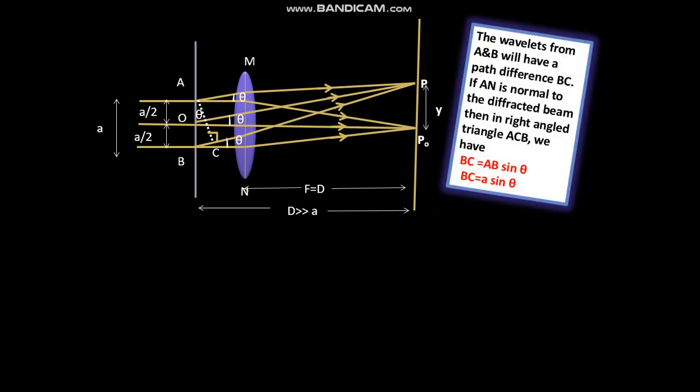The wavelets from A and B will have a path difference of BC. If AN is normal to the refracted beam, then in right angle triangle ACB, we have BC is equal to AB sine theta. So BC is A sine theta.